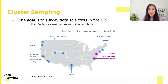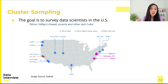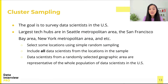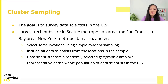Let's consider a simple example. Say we want to survey data scientists in the US, and we found a few tech hubs, such as the Seattle metropolitan area, the San Francisco Bay Area, the New York metropolitan area, etc. It means our population of interest is divided into similar groups in different geographic locations. Then we may simply randomly select some locations using simple random sampling and include all data scientists from those locations in our sample. The underlying assumption is that data scientists from a randomly selected geographic area are representative of the whole population of data scientists in the US.